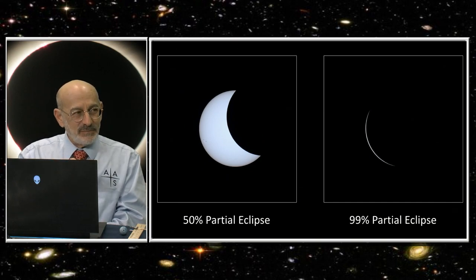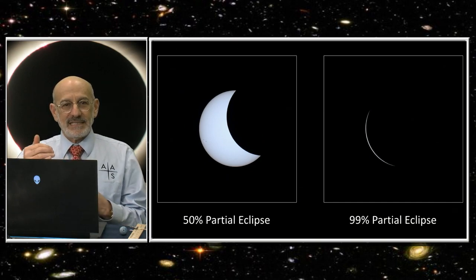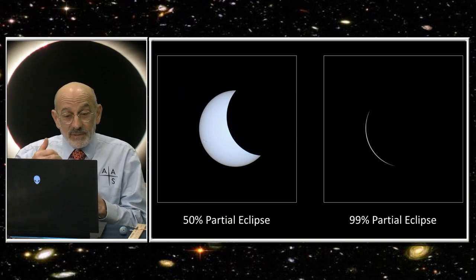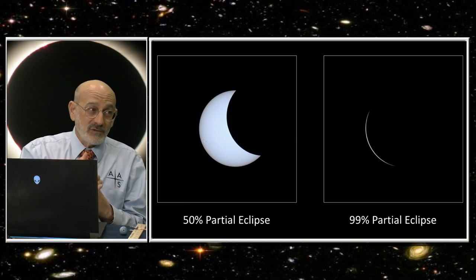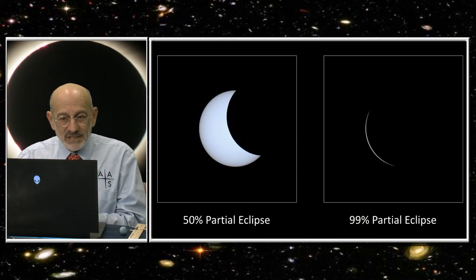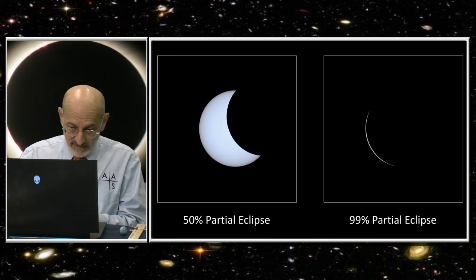Here you see what a 50% eclipse looks like on the left and what a 99% eclipse looks like on the right. These photographs were taken through solar filters so the sky is black. This is what you see if you're looking through eclipse glasses. They let the sunlight through but they don't let the skylight through. But there is no such thing as any percent total eclipse except 100%.